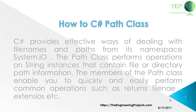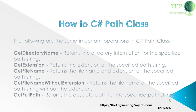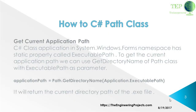The members of the Path class enable you to quickly and easily perform common operations such as returning a file name extension. The following are some important operations in the C# Path class. If you want to get the name of the directory, use GetDirectoryName. To get the file extension, use GetExtension. To get the file name, use GetFileName. To get the file name without extension, use GetFileNameWithoutExtension. To get the full path, use GetFullPath.